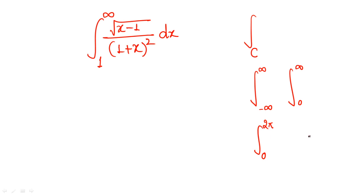For the given question with limits 1 to infinity, we need to convert this into a standard limit form. The first step is to consider a substitution. Here they have provided root(x minus 1). If we consider x minus 1 equal to z, we get root z, but if we consider x minus 1 equal to z squared, we can simplify and get just z out of the square root term — which is simpler.